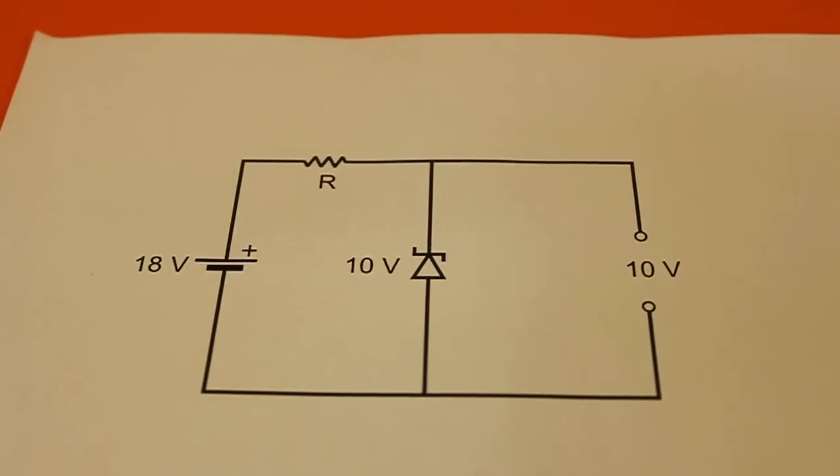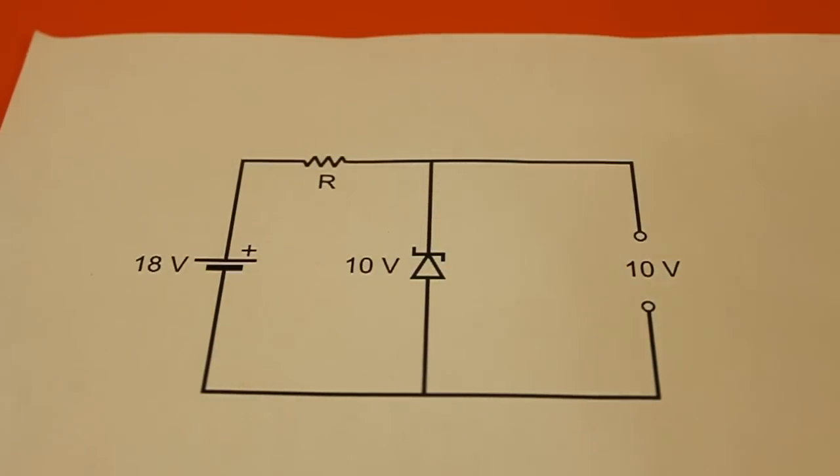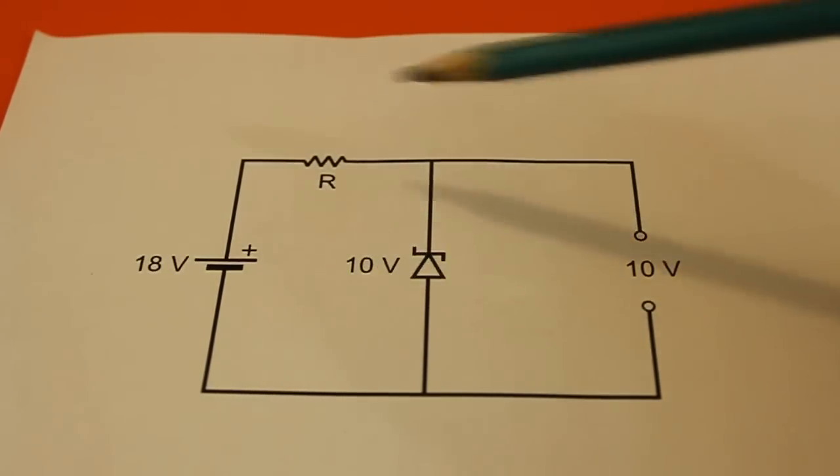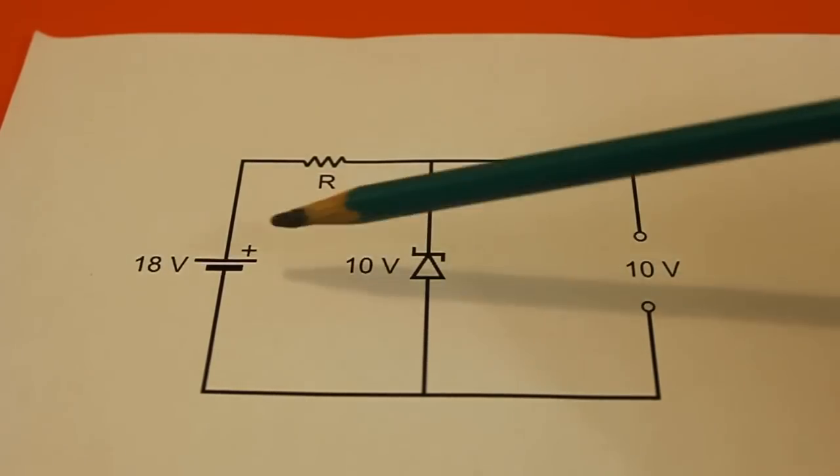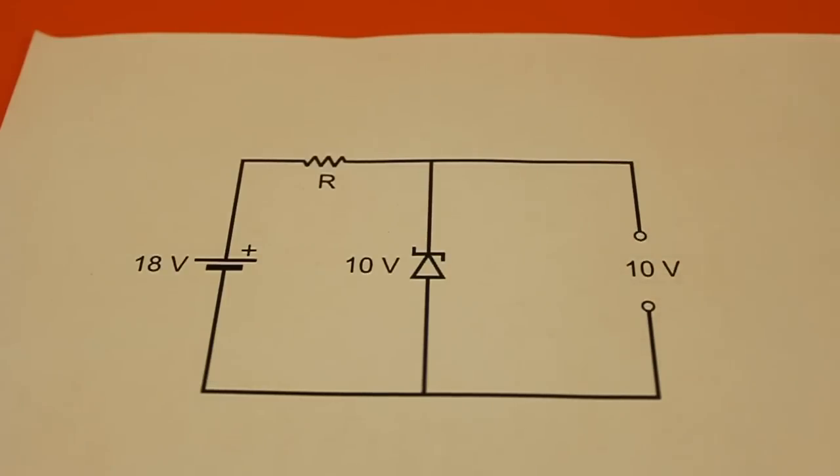This is the typical connection of a Zener diode. If your load needs 10 volts and your power supply is 18 volts, for example, you connect a Zener diode of 10 volts through a resistor and the voltage of the power supply is regulated to the 10 volts that we need.